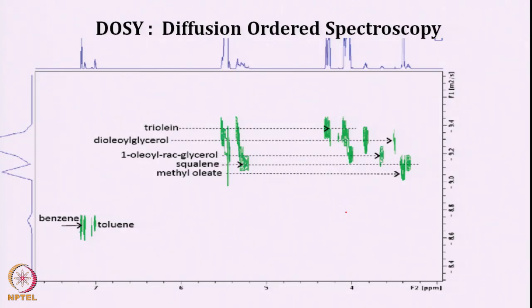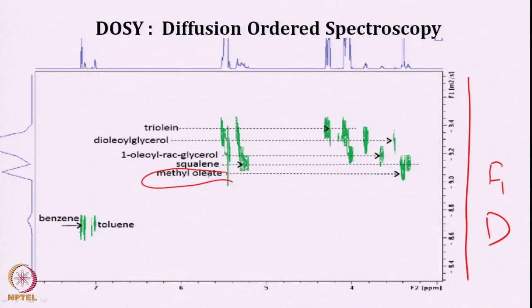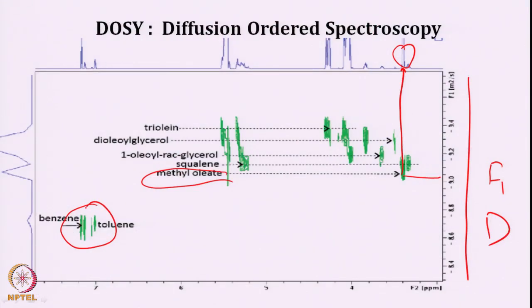Suppose we have a mixture of molecules with different molecular weights — we can get different chemical shifts. In the F1 indirect dimension you have the parameter D. Molecules like dioleoylglycerol, glycerol, or methyl oleate have different diffusion depending upon their shape and size, and that can be correlated with the chemical shift of each moiety. So we know these peaks belong to methyl oleate and their diffusion coefficient is somewhere around minus 9. We can differentiate molecules in a mixture based on their diffusion rate and chemical shift, and they have different diffusion than a solvent like benzene or toluene.